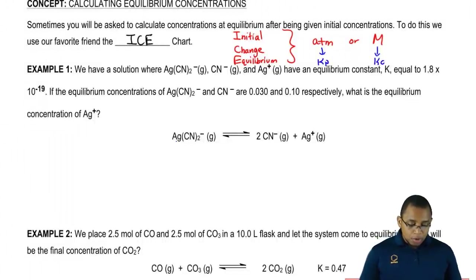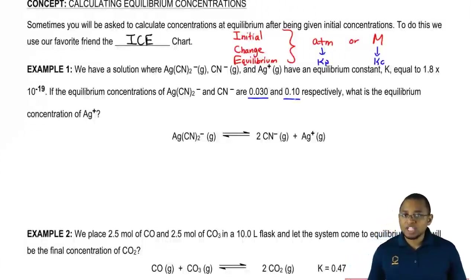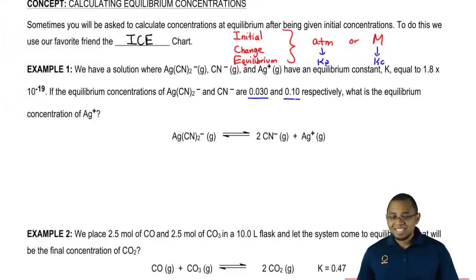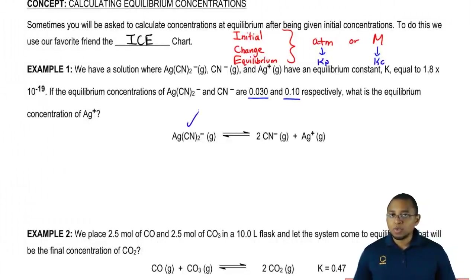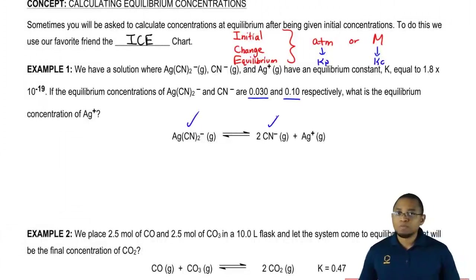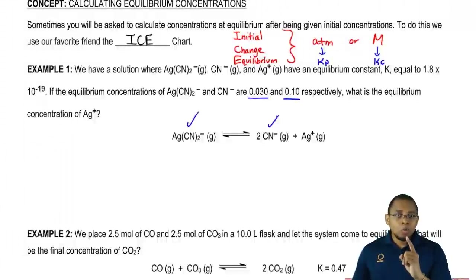If the equilibrium concentrations of AgCN₂⁻ and CN⁻ are 0.030 and 0.10 respectively, what is the equilibrium concentration of Ag⁺? We ask ourselves: do we use an ice chart or not? Here we're given the equilibrium amounts of two compounds, so we're missing only one equilibrium amount. If you're missing only one equilibrium amount, you don't have to do an ice chart.